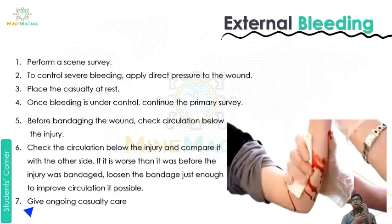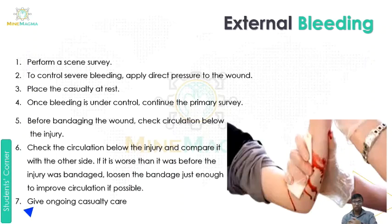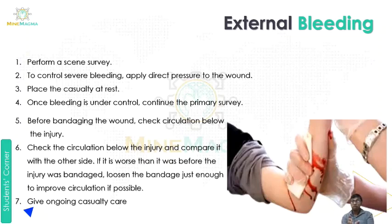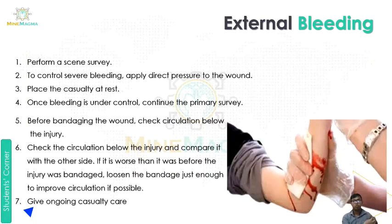Next is external bleeding. If there is a cut, bleeding starts and blood comes out — this is external bleeding. First, perform a scene survey to understand how the injury occurred. Second, to control severe bleeding, apply direct pressure to the wound. If the bleeding is very fast and blood is coming out, we have to put direct pressure on it so that the blood flow is controlled, otherwise all the blood will come out.